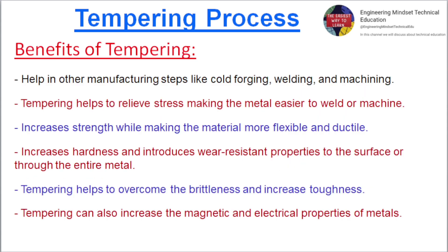Tempering helps in other manufacturing steps like cold forging, welding, and machining by relieving stress, making the metal easier to weld or machine. It increases strength while making the material more flexible and ductile. It also increases hardness and introduces wear-resistant properties to the surface or through the entire metal, helps overcome brittleness, increases toughness, and can improve the magnetic and electrical properties of metals.